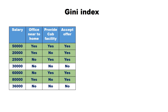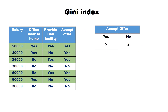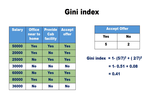Let us compute the Gini index for the dataset shown here. There are 7 training records; accept offer is the class label. There are 5 records with class label Yes and 2 records with class label No. Hence, the Gini index is 1 minus ((5/7)² + (2/7)²) = 1 minus (0.51 + 0.08) = 0.41. The Gini index for this dataset is 0.41.